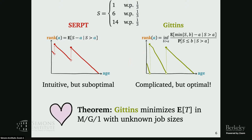So it's more complicated, but it's optimal. This is a classically known result — although talk to me after if you're curious about what classically known means, because it turns out it was a bit more complicated than that. This is what the Gittins index looks like in a single-server sketch: taking the job size distribution, my stochastic model, and crafting on a job-by-job basis a priority function based on that job size distribution. By always serving the job of least rank, I end up with this optimal scheduling policy.